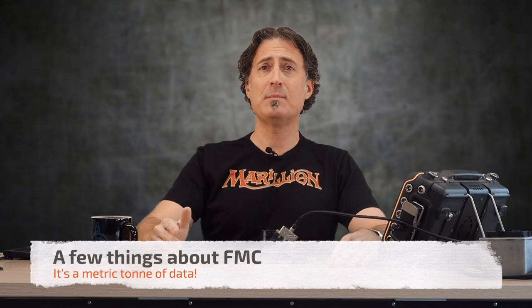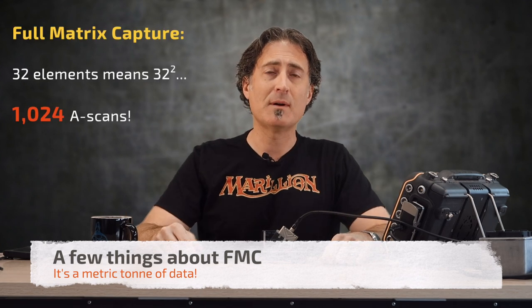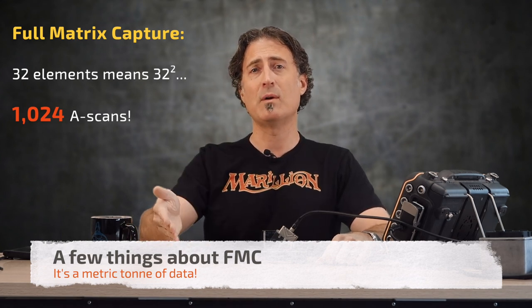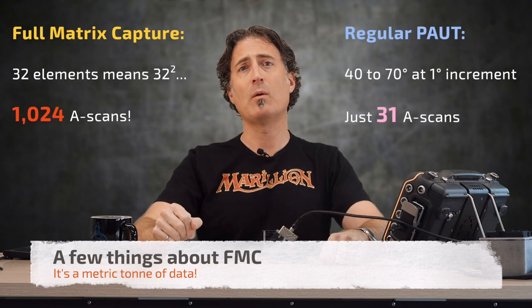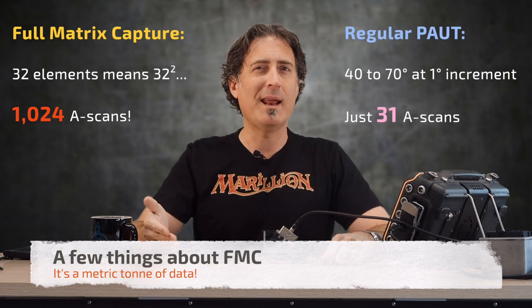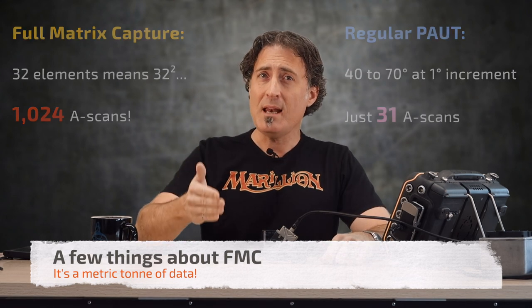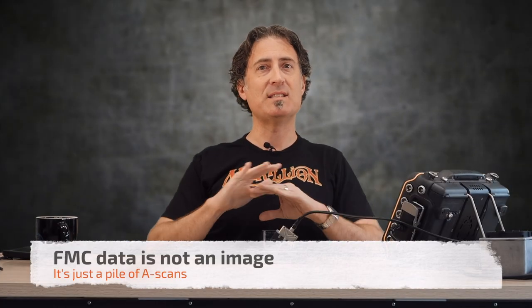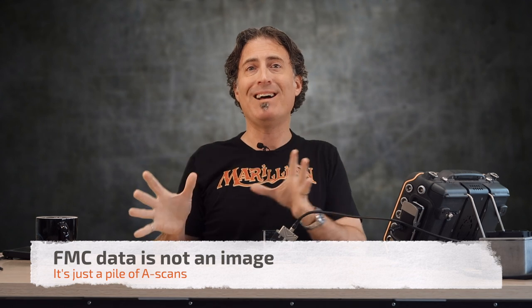A few things about FMC. Number one, it is a ton of data. With a 32-element transducer, you've got 32 squared, or 1024 A-scans. Compare that to regular phased array — say 40 to 70 degrees in a one-degree increment — you have 31 A-scans. You can store FMC data raw and process it later, but from a data storage standpoint, it's not really practical. And FMC data by itself is not an image — it's just a pile of A-scans.